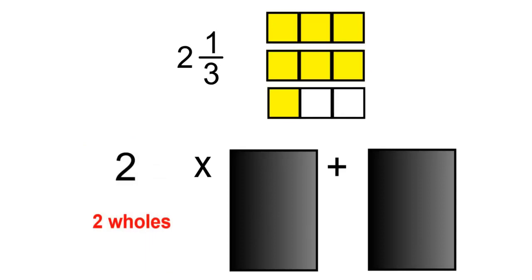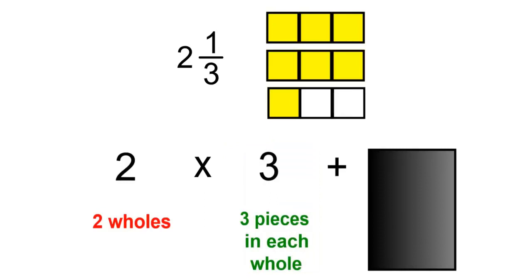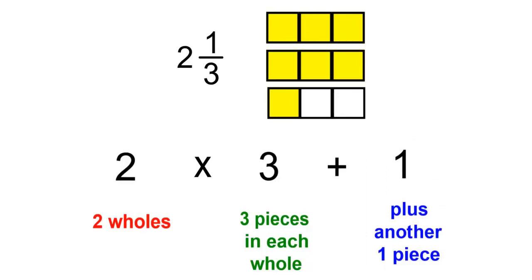2 and 1 over 3 can be seen as two wholes multiplied by three pieces in each whole, which is the denominator, and the numerator is the extra piece.